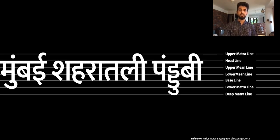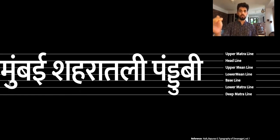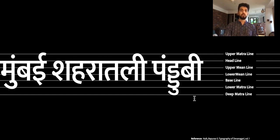There is an upper matra line which is as far as all the ascenders go, a headline where the shiro rekha rests, and there are two mean lines — an upper mean line and a lower mean line — which are used to identify the positioning of different features. There is a baseline on which the stem ends and all the letters align. There is a lower matra line where consonants with a U sound come, and then there is an even deeper matra line which is where vertical conjuncts and the combination of vowels come in.